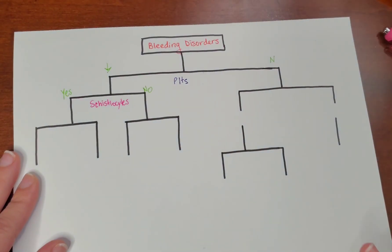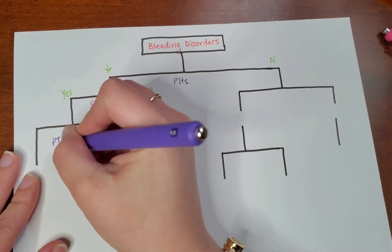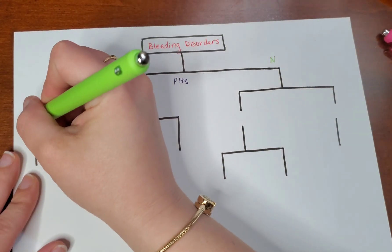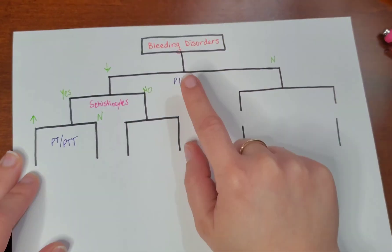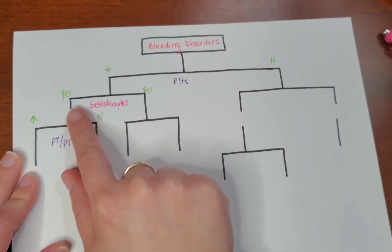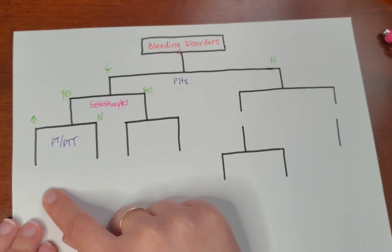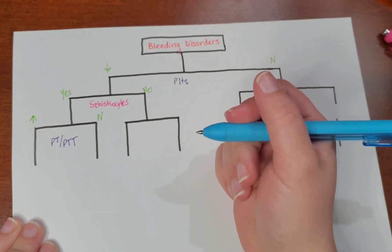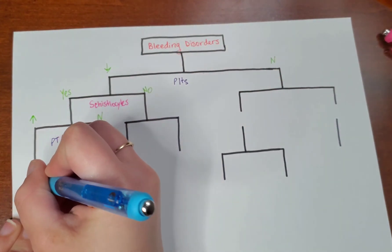If there are schistocytes, I want you to think about PT and PTT. If you look for these values, are they increased or are they normal? Low platelets, you're seeing schistocytes, and PT and PTT are all increased — what do you think this is? This is DIC.